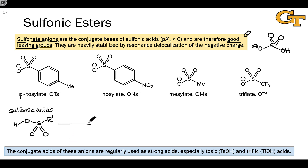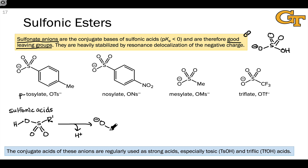If we treat these with a base — and it takes only a very, very weak base to remove this proton in a sulfonic acid — we end up with a heavily resonance-stabilized anion, in which the negative charge is living on all three oxygen atoms within the sulfonate anion. Let's quickly draw some resonance structures to illustrate that.